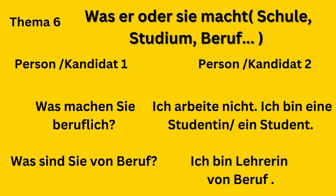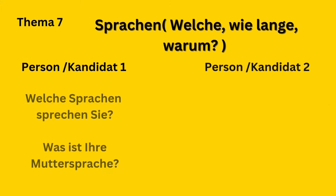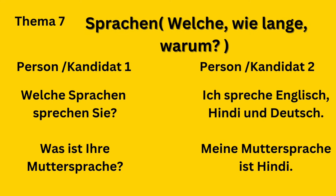Now Theme 6: Was er oder sie macht (Schule, Studium, Beruf). You can ask: Was machen Sie beruflich? Answer: Ich arbeite nicht, ich bin eine Studentin oder ein Student. Or you can ask: Was sind Sie von Beruf? Answer: Ich bin Lehrerin von Beruf.